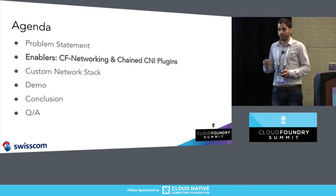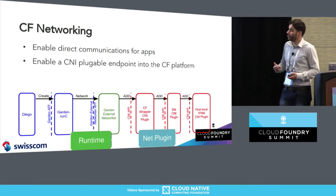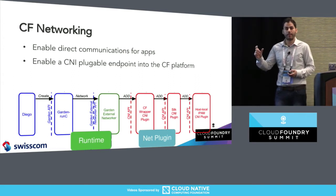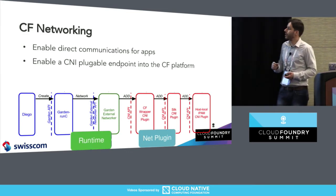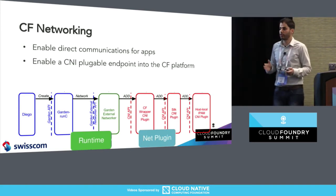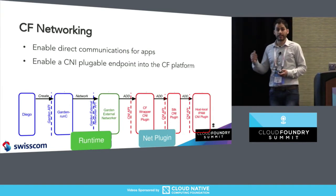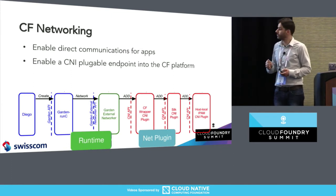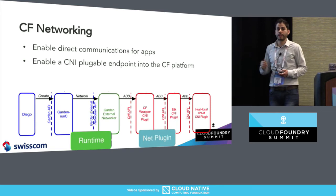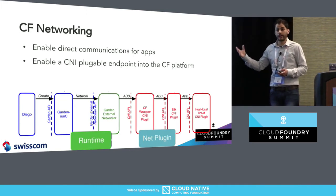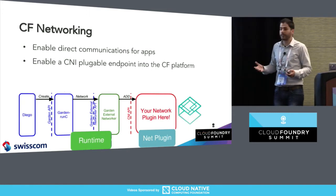Two things happened that allowed us to address the problem another way. The CF networking stack changed — the CF networking team replaced the old Kawasaki stack and enabled direct communication, making the microservice experience better with low latency. In my context, what it basically did is add a CNI plugin endpoint in the platform. It added one component called Garden External Networker, which is part of Garden-runC. It put in a CNI interface and added a battery-included solution, saying that by providing a plugin according to the CNI standard, you can actually replace and plug in your own stuff.